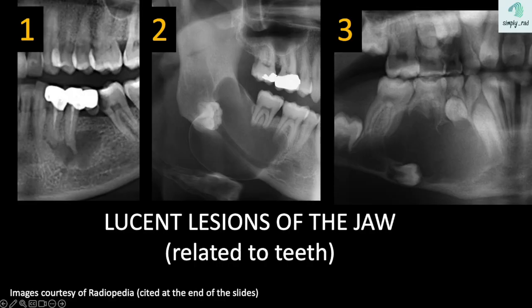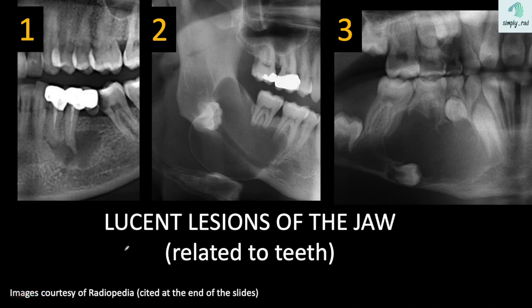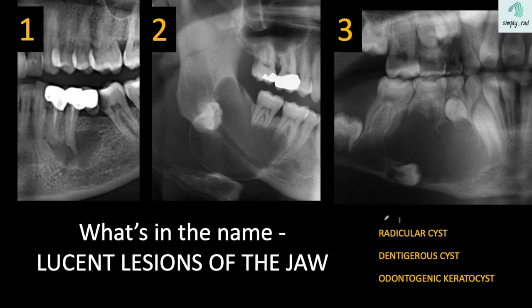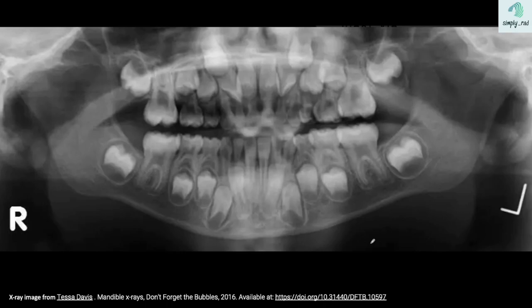Lucent lesions are a common finding in X-rays of the jaw. Today, let us try to understand the pathology behind three lucent lesions. Next time we encounter these, hopefully the name will spark clues to our differentials. An understanding of these terms and how they can explain the location and appearance of lesions requires a short review of the embryology.